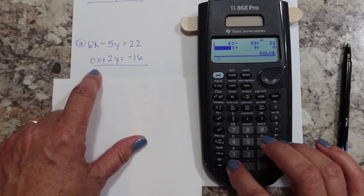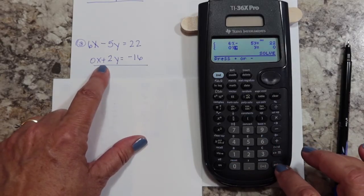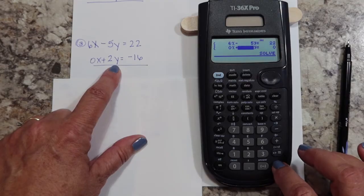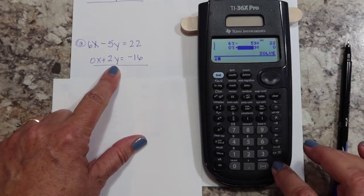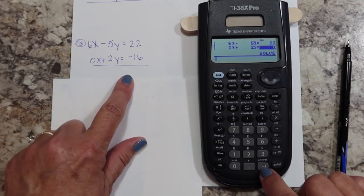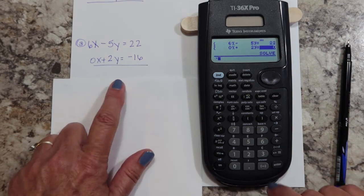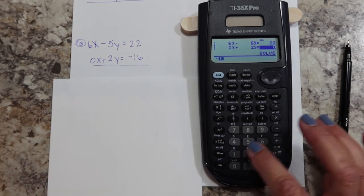Now for my second one, I'm going to put zero, enter. Plus is the default, so I'm hitting enter. Two, enter, and then I have the negative button down here, and sixteen.